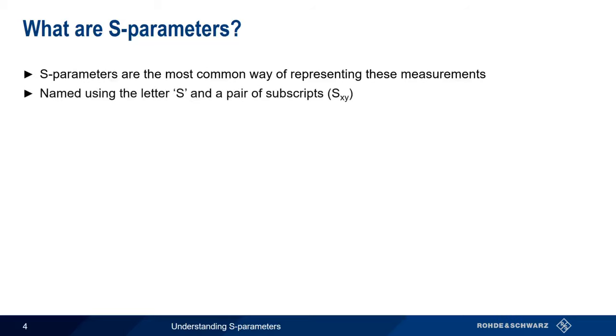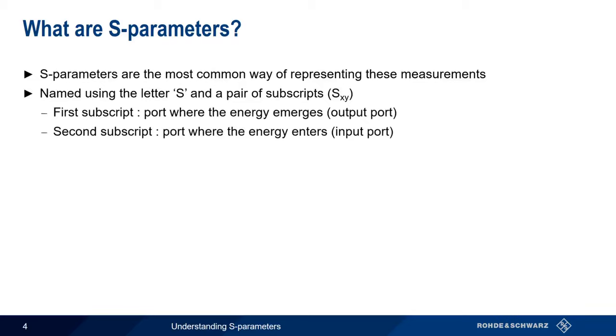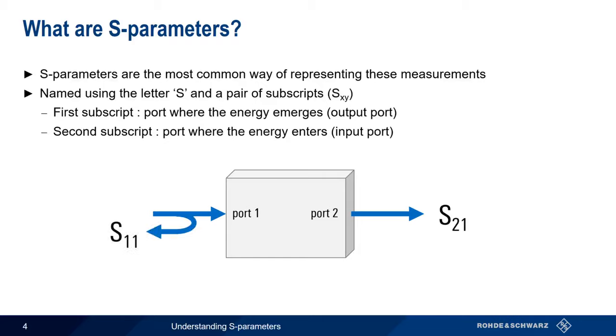S-parameters are named using the capital letter S, followed by a pair of subscripts. The first subscript is the port where the energy emerges, and the second subscript is the port where the energy enters. For example, if we measure the amount of power passing through a two-port network, this quantity would be referred to as S21. The amount of power reflected back on port 1 would be referred to as S11.